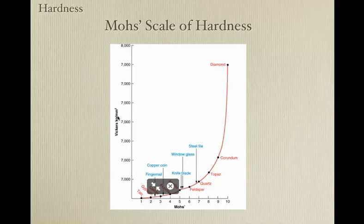Here is Mohs scale of hardness. Here are the 10 minerals going from 1 through 10: talc, gypsum, calcite, fluorite, apatite, feldspar, quartz, topaz, corundum, and diamond. Notice the differences in hardness between each of these minerals are not consistent — there's a big jump as you get toward the end.